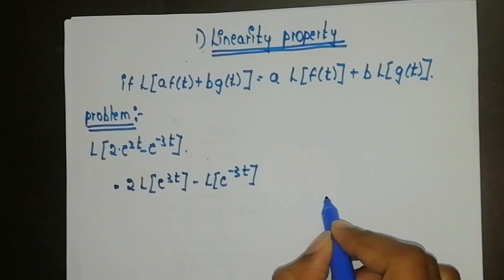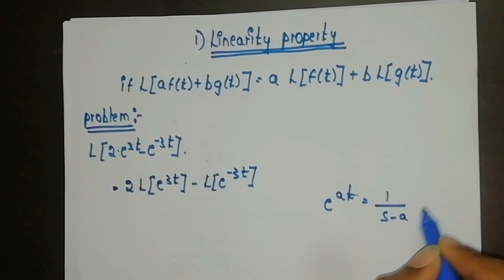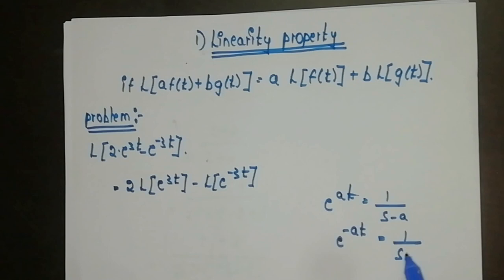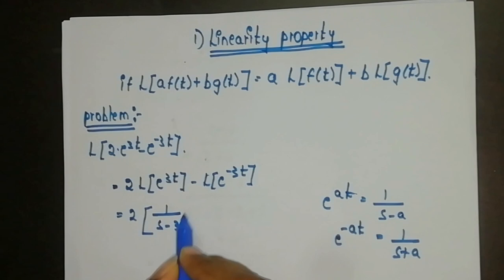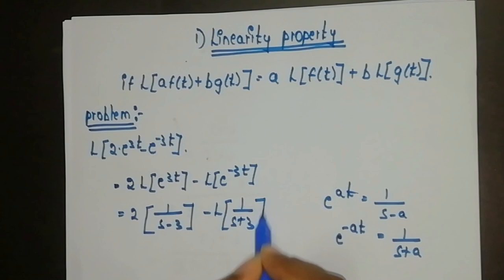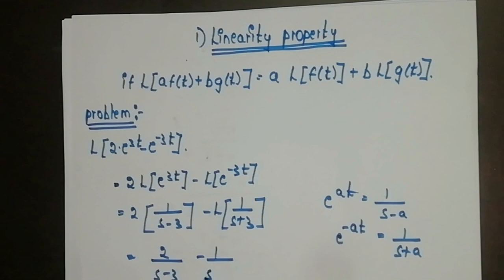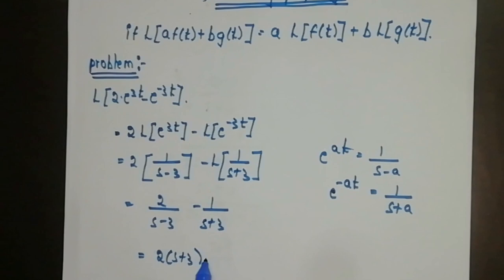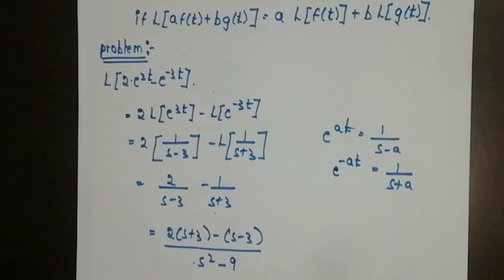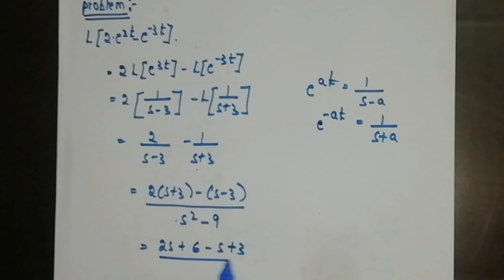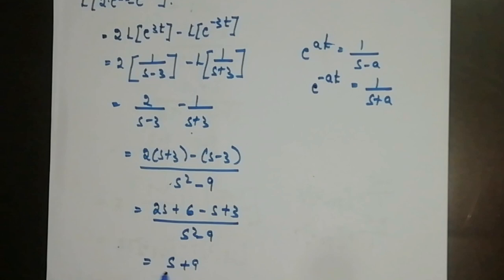The formula for L{e^(at)} is 1/(s−a) and for L{e^(−at)} is 1/(s+a). So we get 2·[1/(s−3) − 1/(s+3)], which gives 2·[(s+3 − (s−3)) / (s²−9)] = 2·[6/(s²−9)] = (2s+6−s+3) / (s²−9) = (s+9)/(s²−9).